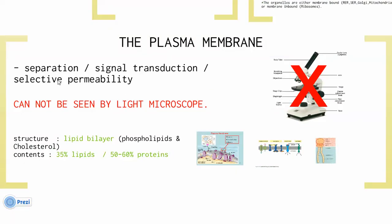The plasma membrane — first, you need to know its functions. Number one, separation. Number two, signal transduction. And number three, selective permeability. Selective permeability means selectively allowing certain materials to enter the cell and preventing others. The second piece of information: the plasma membrane cannot be seen by light microscope.